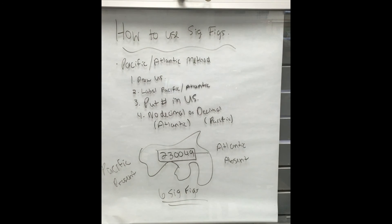Now try a number where the decimal is absent. In this case we will start from the Atlantic, because absent and Atlantic both start with an A. Begin counting from the first non-zero digit on the right of the number being analyzed, then count to the final digit on the left side of the number — this is the total amount of significant figures. In this case we have six significant digits because we started counting at nine and ended at the two.